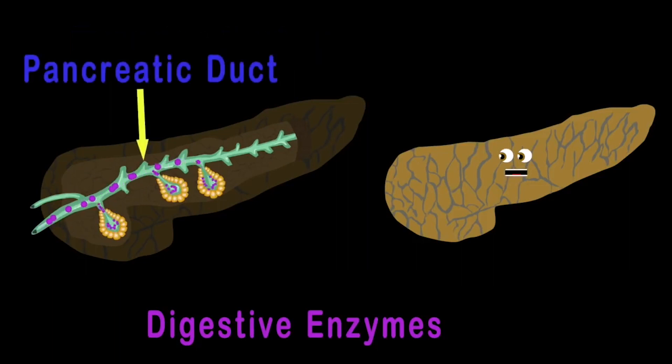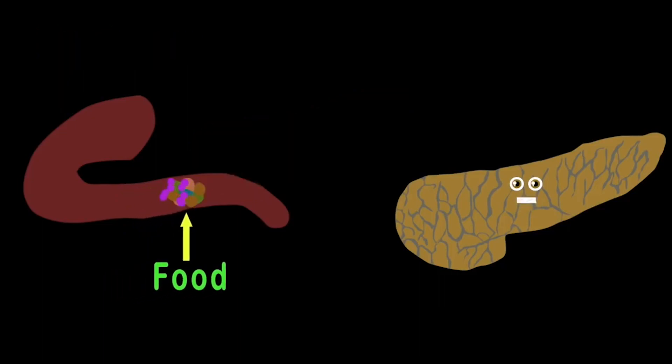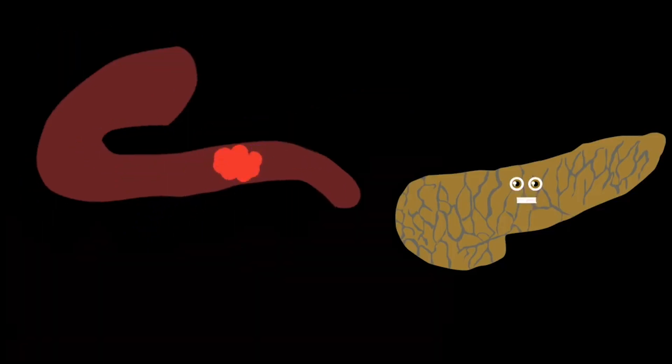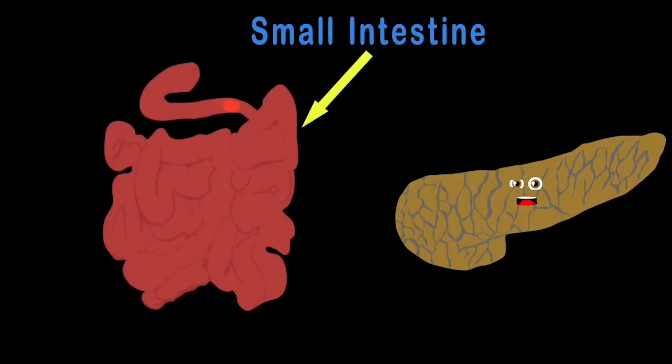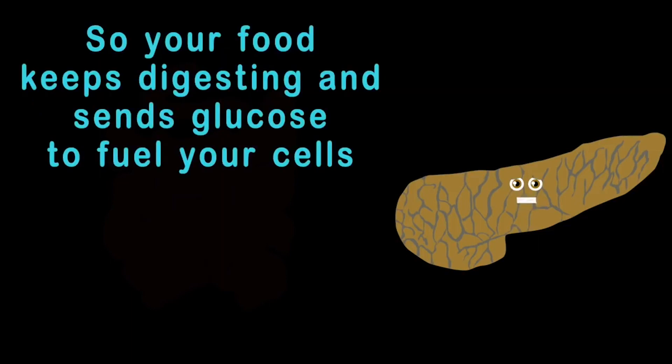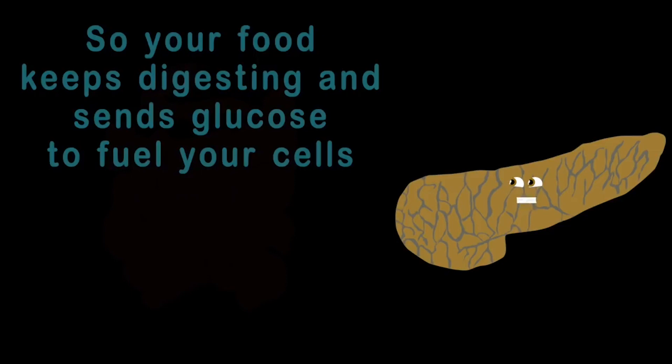Now the exocrine system produces digestive enzymes through the pancreatic duct to the duodenum line. The job of the enzymes is to help digest all your food, so it's easily absorbed by the small intestine. So take care of your pancreas so it continues to work well, so your food keeps digesting and sends glucose to fuel your cells.